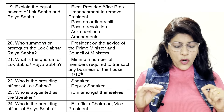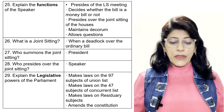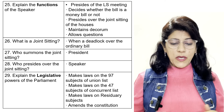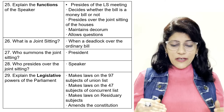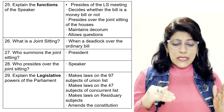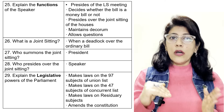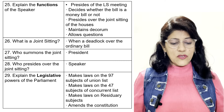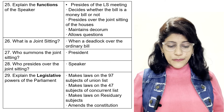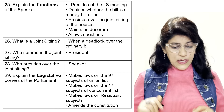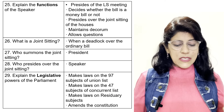Who is the presiding officer of Lok Sabha? The Speaker, or in his absence the Deputy Speaker. The Speaker is elected from among the members themselves. Who is the presiding officer of Rajya Sabha? The ex-officio Chairman, who is the Vice President. Functions of the Speaker: presides over Lok Sabha meetings, decides whether a bill is a money bill or not, presides over the joint sitting of the houses, maintains decorum, and allows questions.